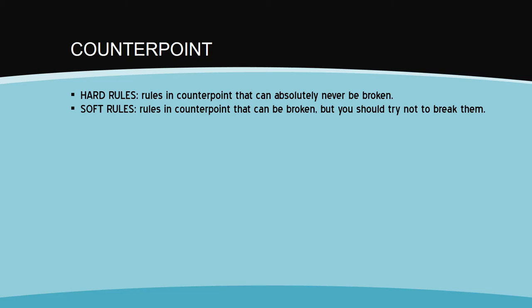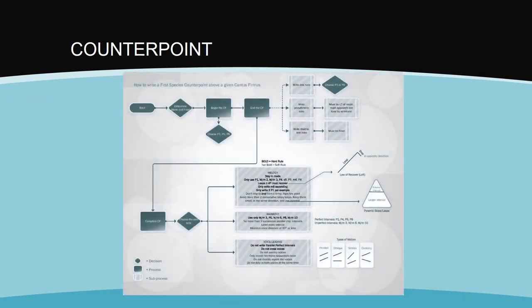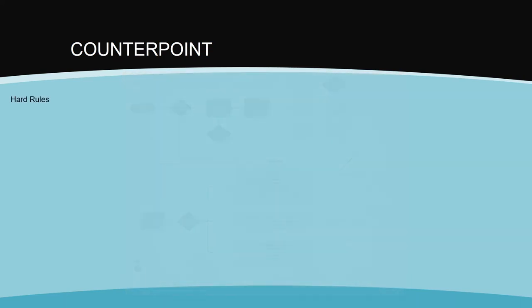As this module progresses, we'll keep track of the hard rules on the side of the screen. In the downloadable materials for this module, you will find a flowchart called How to Write a First Species Counterpoint Above a Given Cantus Firmus. This will provide you with a procedure that you can follow in order to compose a first species counterpoint. Let's try writing an example above a cantus firmus and we'll go over each hard rule as we encounter them.